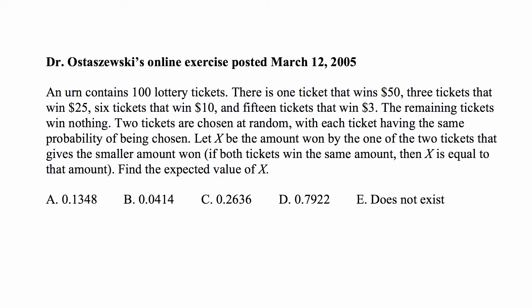Two tickets are chosen at random, with each ticket having the same probability of being chosen. Let X be the amount won by the one of the two tickets that gives the smaller amount won. If both tickets win the same amount, then X is equal to that amount. Find the expected value of X.